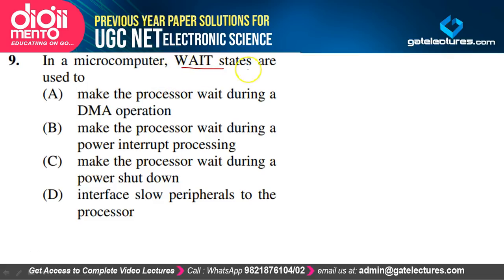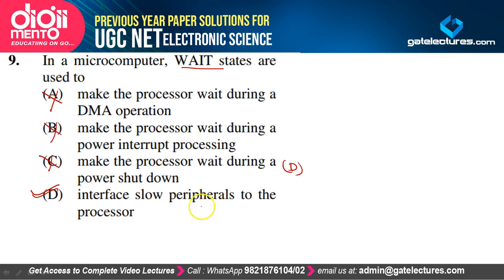In a microcomputer, wait states are used to: make the processor wait during DMA — no; during interrupt processing — no; during power shutdown — no; or to interface slow peripherals to the processor — yes, this is correct. Wait states are extra time required by the processor so that slow peripherals can operate properly. That's why wait states are incorporated in processing. Option D is the correct answer.